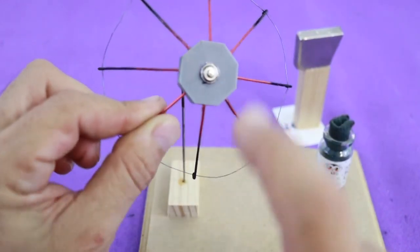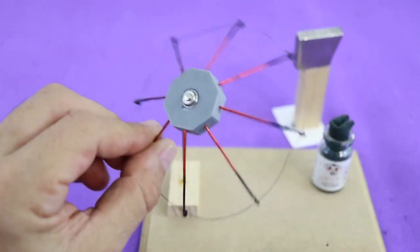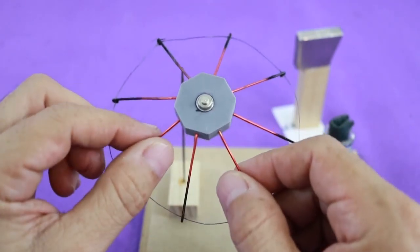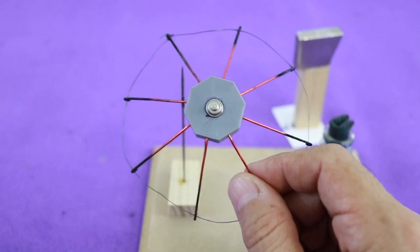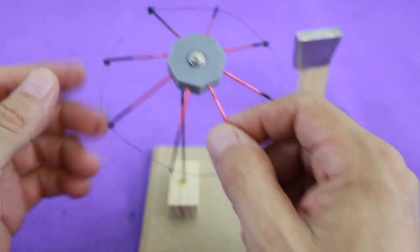The center of the rotor is 3D printed. I added these copper wires here which are non-magnetic. And this metal cap is just the positive terminal of a AAA battery.